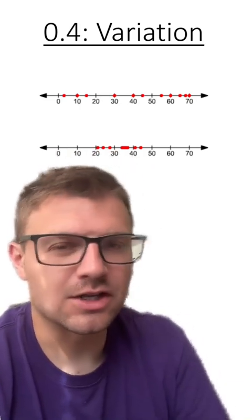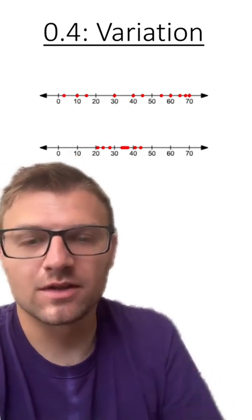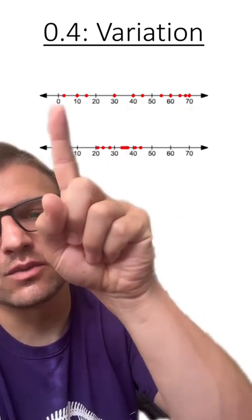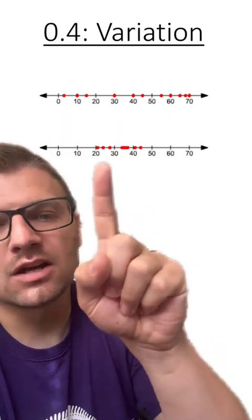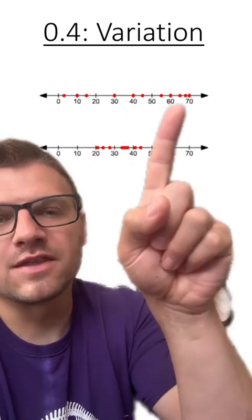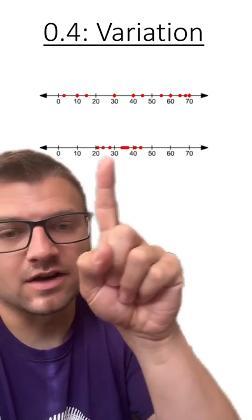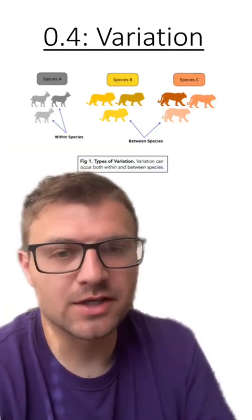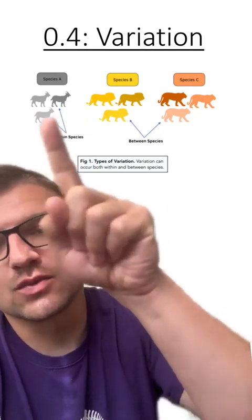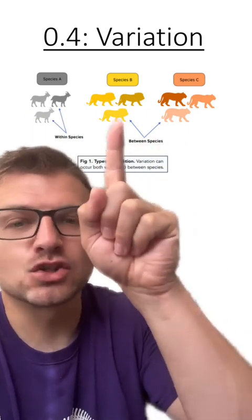Thinking about within group variation, look at these two sets of data — which has more and which has less? Looking at the top line, we can see there's a lot of variation within these data points, the red dots. In the other set, there's less variation. So there's more within group variation in the first than in the second. Thinking about within versus between group variation, we can look at this with species: within group variation is within one species, while between group variation looks at variation between different species.